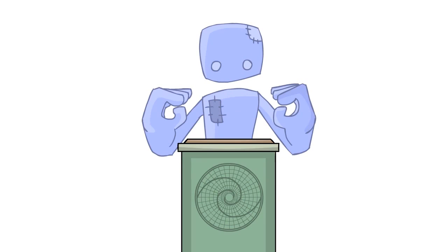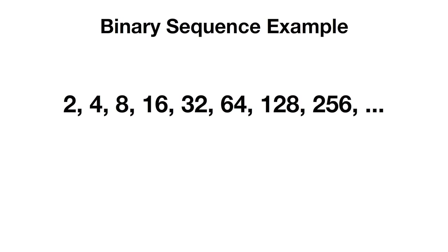The only other sequence you need to know for this is binary sequences. This is a sequence like 2, 4, 8, 16, 32. We're just doubling the last number instead of adding it to the previous one.